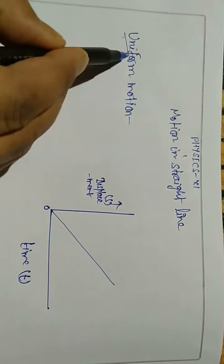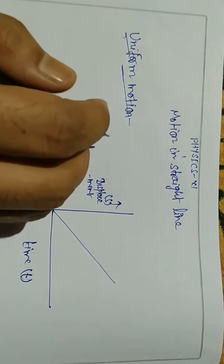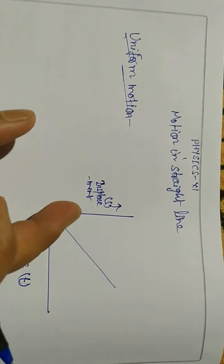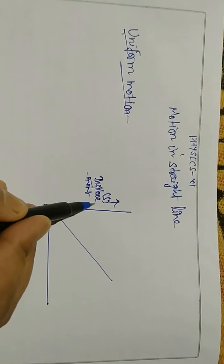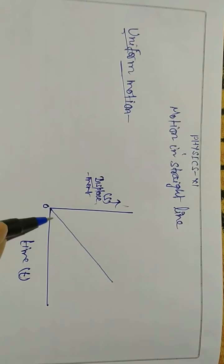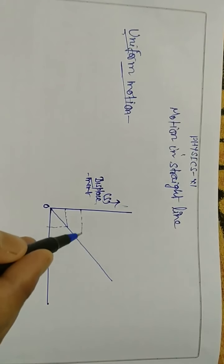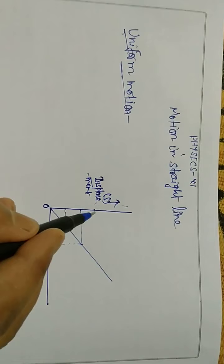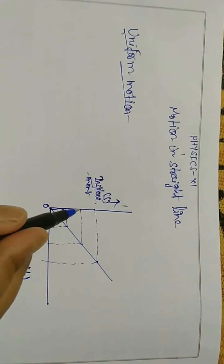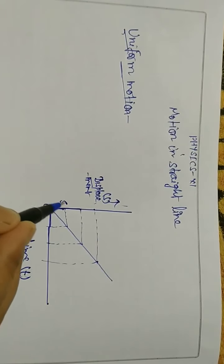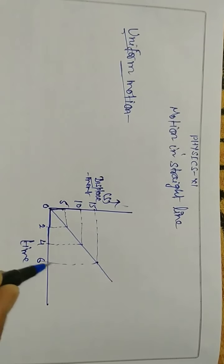Our topic is uniform motion. If an object covers equal distances in equal intervals of time, it is uniform motion. In this graph between displacement on the y-axis and time on the x-axis, the object covers equal distances in equal intervals. For example, suppose 5 meters every 2 seconds, written as 5, 10, 15 on one axis and 2, 4, 6 on the other.